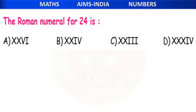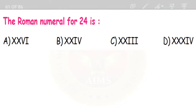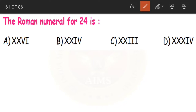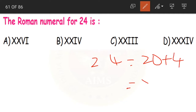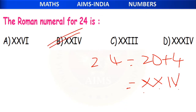Next: the Roman numeral for 24 is dash. Split 24 as 20 + 4. 20 is written as XX, and 4 is written as IV. So XXIV, that is option B, is the Roman numeral for 24.